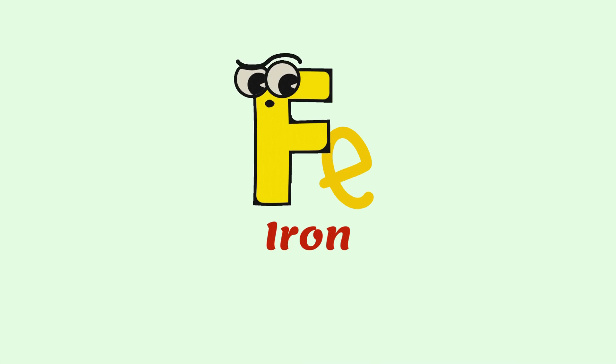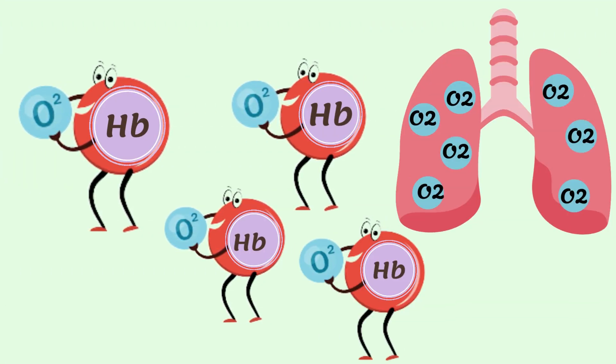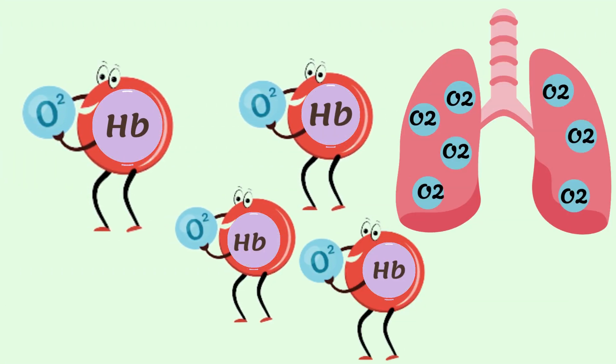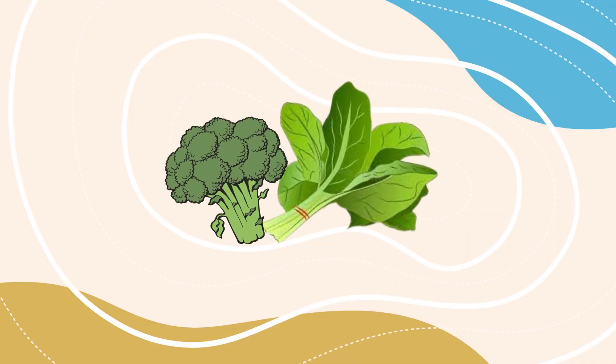Iron is required to make a very important component of red blood cells, that is hemoglobin. The job of hemoglobin is to carry oxygen from lungs and transport it to the tissues. Iron is present in chicken, leafy green veggies like spinach or broccoli, and fish.